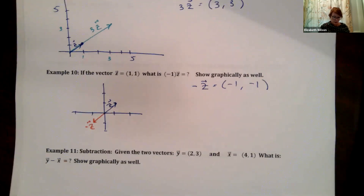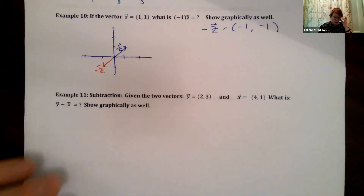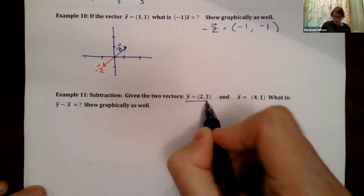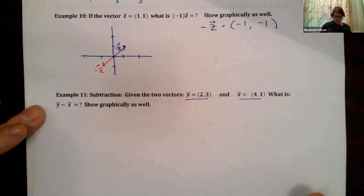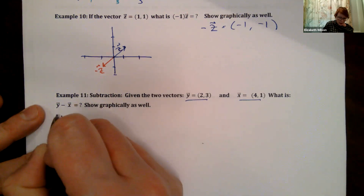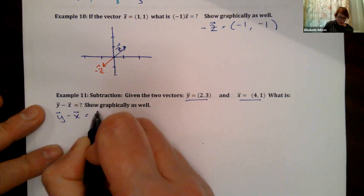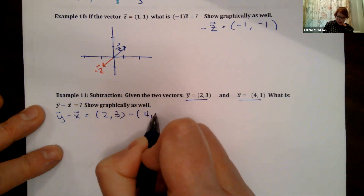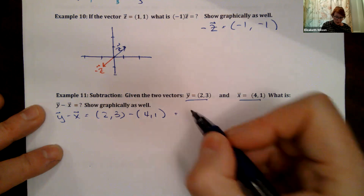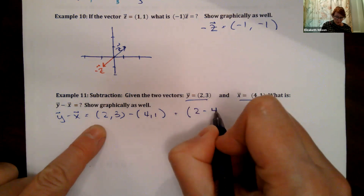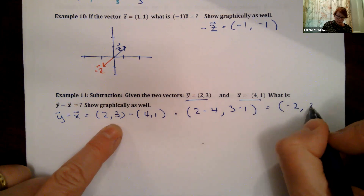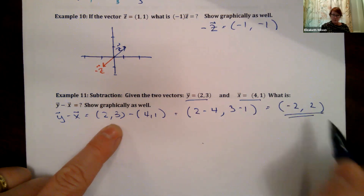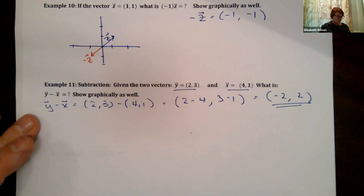In example 11, we have Y equals 2, 3 and X equals 4, 1. Y minus X equals 2, 3 minus 4, 1. Component by component: 2 minus 4 is minus 2, and 3 minus 1 is 2. So Y minus X equals the vector minus 2, 2.